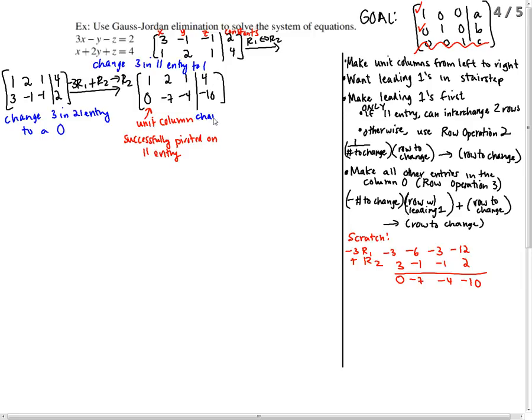So we are going to change the negative 7 in the 2,2 entry to a 1, this guy right here. Because it's not the 1,1 entry, I can't interchange two rows. That would screw up the work I'd already done. So I want to use row operation 2, which tells me to do 1 over the number I'm trying to change. I'm trying to change that negative 7.